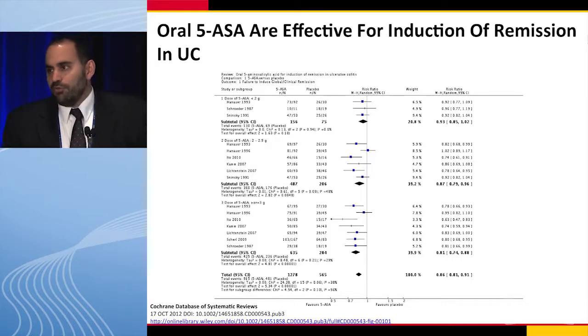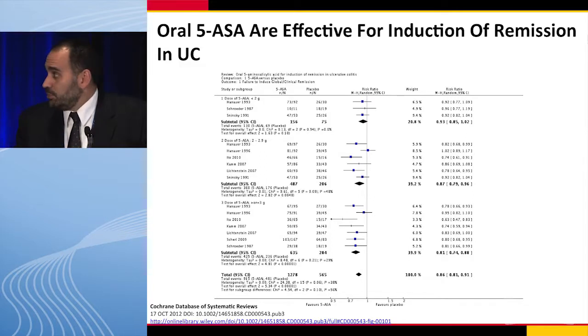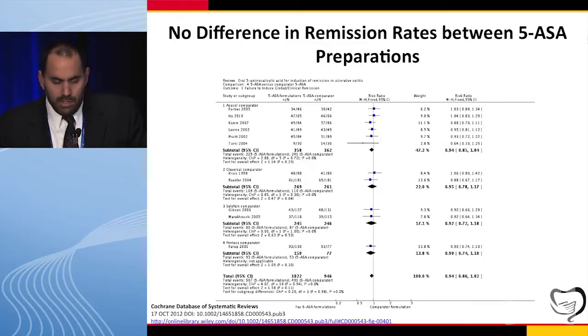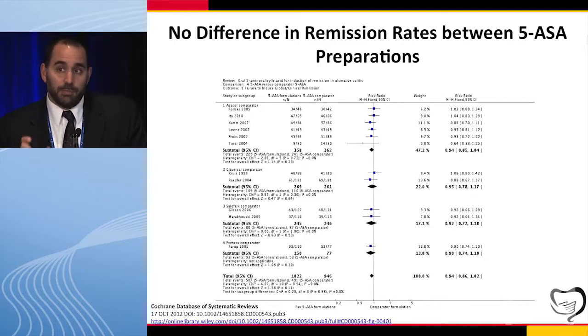Oral 5-ASA is effective for induction of remission. This is a Cochrane meta-analysis — on the left side of the slide favors induction of remission, on the right is against remission — and all of these trials in summary support that 5-ASAs are effective for induction of remission. Another question is whether there are differences in remission rates among the various products. This meta-analysis compares a standard 5-ASA to a comparator, and the summary of all these studies really approaches unity — so there's really no difference among the various products. The take-home point is: pick whichever one you're comfortable with, whichever one the insurance company will allow, give it an adequate dose, and they should work the same.